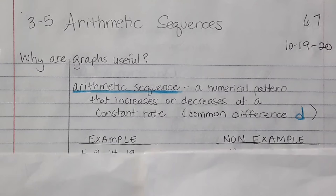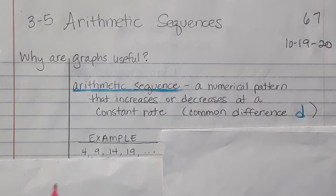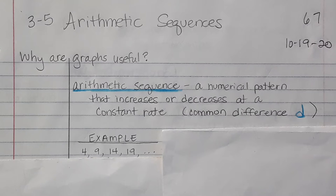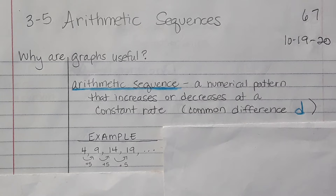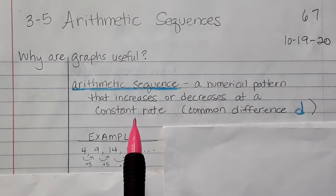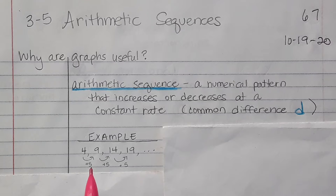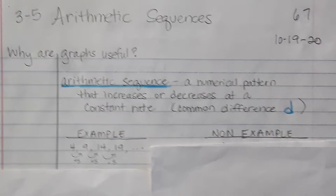For example, if I have these numbers here: 4, 9, 14, 19, and so on, I can see that the numbers increase by 5 each time. Therefore, there's a constant rate, increasing at a constant rate, and the common difference is d. The common difference here is a positive 5.